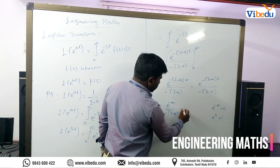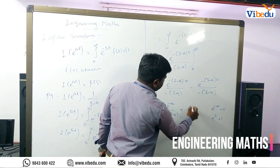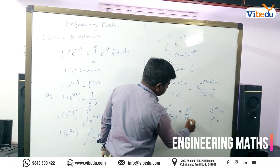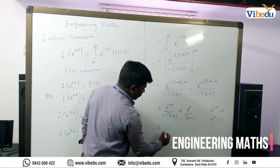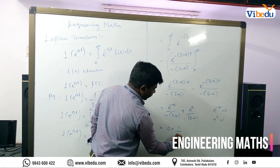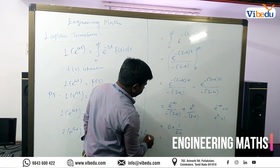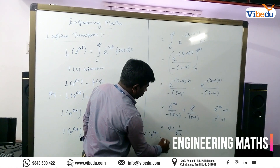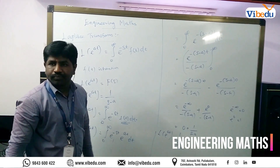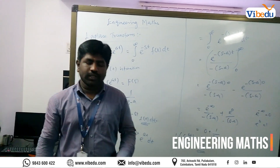So e^(−∞) is 0, plus e^0 is 1 divided by (s minus a). Therefore L{e^(at)} equals 1 divided by (s minus a). This is the theorem. Thank you for watching.